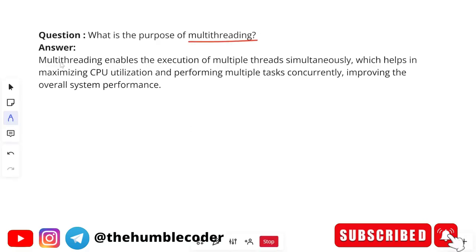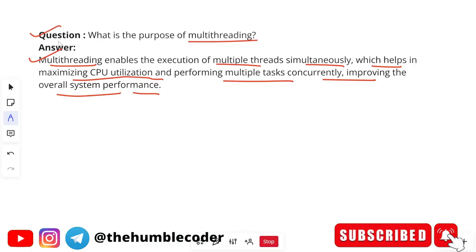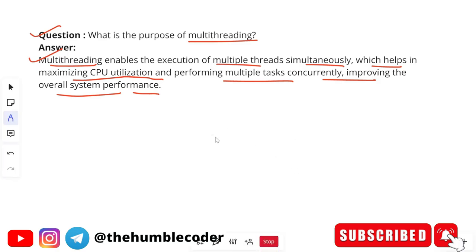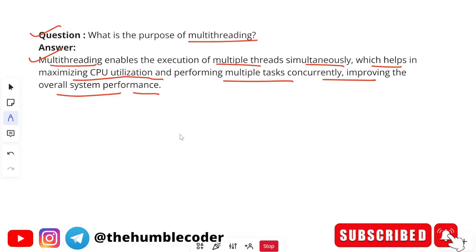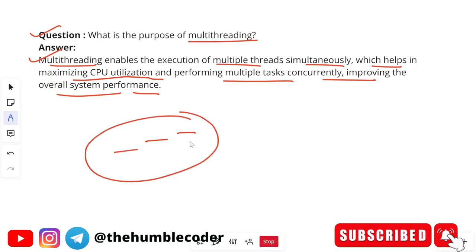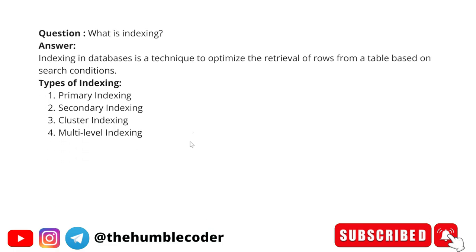What is the purpose of multi-threading? Multi-threading enables the execution of multiple threads simultaneously, which helps in maximizing CPU utilization and performing multiple tasks concurrently, improving overall system performance. When one thread of a task is on hold, other tasks can execute. This way multiple tasks can perform concurrently. Without multi-threading, one task would complete before the next starts, which is very time-consuming — multi-threading solves this problem.